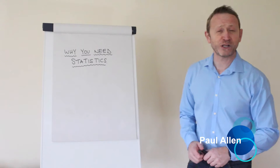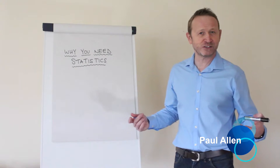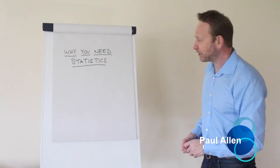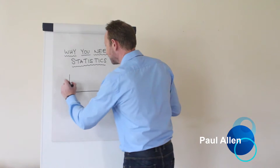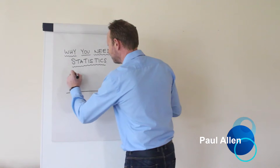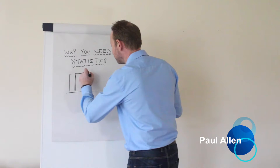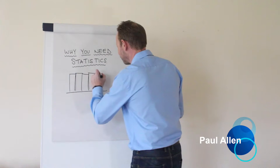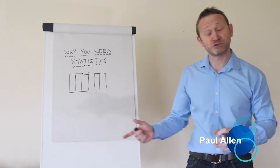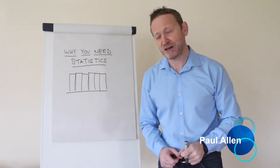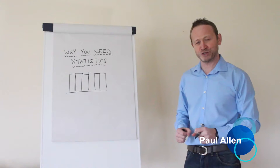If I roll that dice a thousand times, I get a nice pattern. Usually equal quantities of ones, twos, threes, and so on — this kind of uniform distribution. Not perfectly flat, but an equal chance of getting all the numbers.